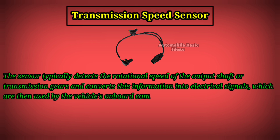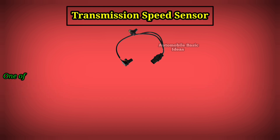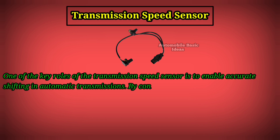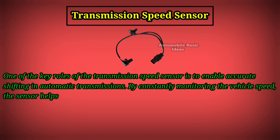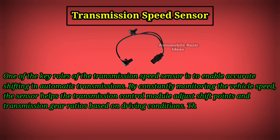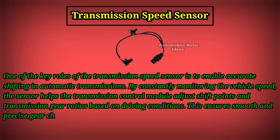One of the key roles of the transmission speed sensor is to enable accurate shifting in automatic transmissions. By constantly monitoring the vehicle speed, the sensor helps the transmission control module adjust shift points and transmission gear ratios based on driving conditions, ensuring smooth and precise gear changes.